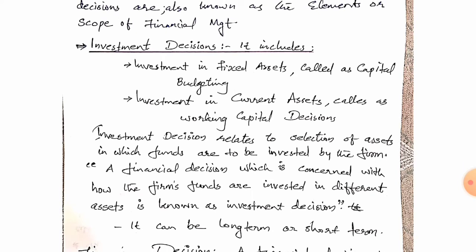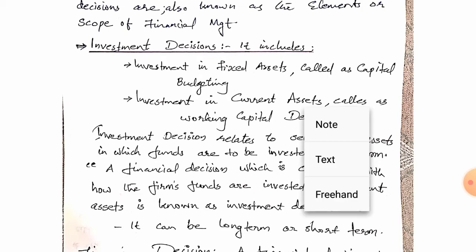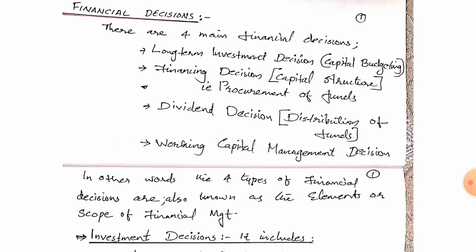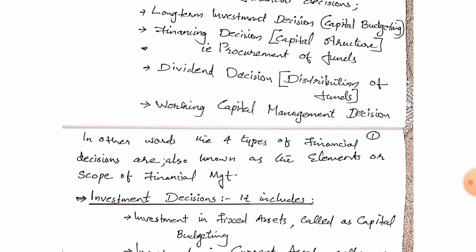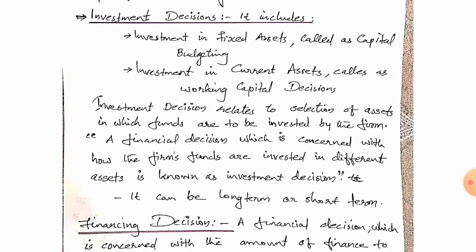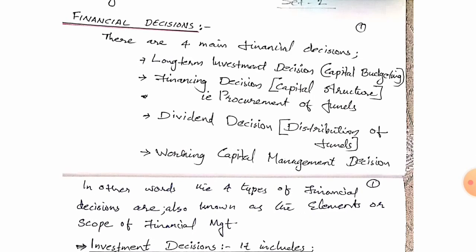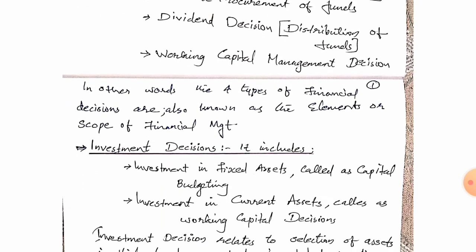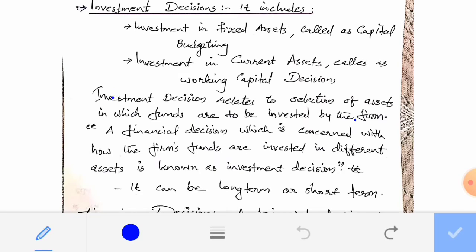The Elements or Scope of Financial Management means: Capital Budgeting, Financing Decision, Dividend Decision, and Working Capital Management. The first one is Investment Decision, also known as Capital Budgeting or Long Term Investment Decision.